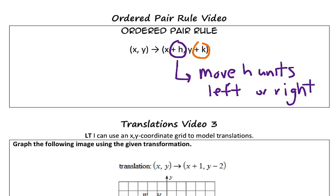If we want to move left, our H value would be negative, whereas if we want to move right, our H value would be positive.